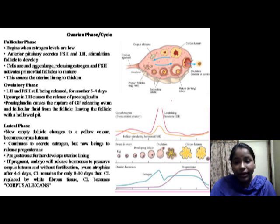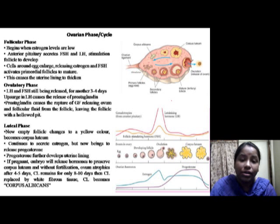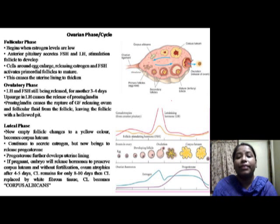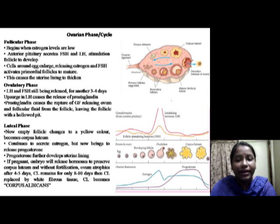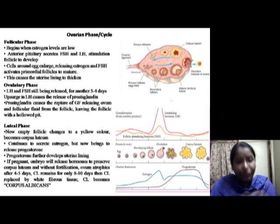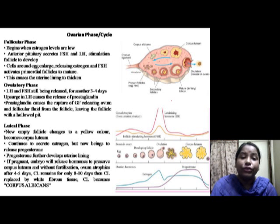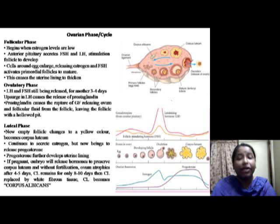Once the Graafian follicle is mature, estrogen peaks to a point where it causes a positive feedback loop to the anterior pituitary, resulting in a massive release of luteinizing hormone known as the LH surge. This LH surge causes the wall of the Graafian follicle to break down, releasing the egg. The LH also turns the follicle into the corpus luteum. Twenty-four to thirty-six hours after the LH surge, ovulation takes place.